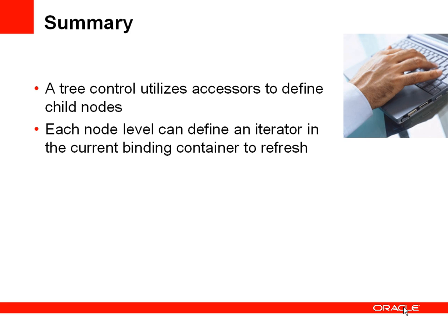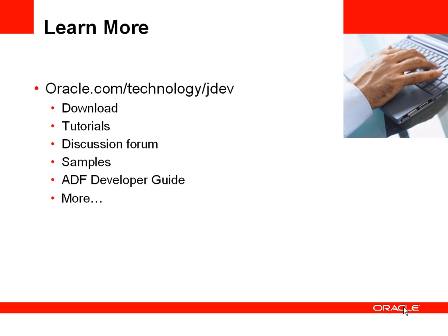To summarize, you've seen how a tree control can utilize the accessors defined on a view object to define the child nodes on that tree control, and at each level of that tree control you can define which iterator should be refreshed whenever that node has been selected. For more information you can go to the OTN website. Thank you very much for listening — we'll see you next time.